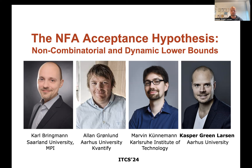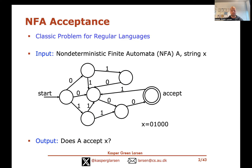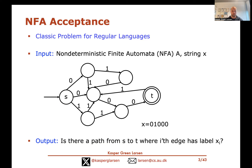In this paper we look at a classic problem called NFA acceptance, concerning regular languages that you might have heard of in an introduction to theory of computer science course. In this algorithmic problem, the input is a non-deterministic finite automaton — an NFA — call it A, and a string x, and the question is: does this NFA accept the string x? Such an NFA has a start node and an accept node, with edges labeled by characters, and the string x is accepted if there's a path from the start node s to the accept node t where the i-th step follows an edge labeled with the i-th character of x.